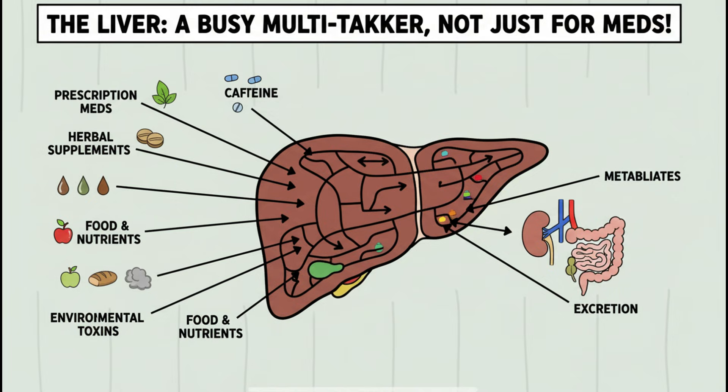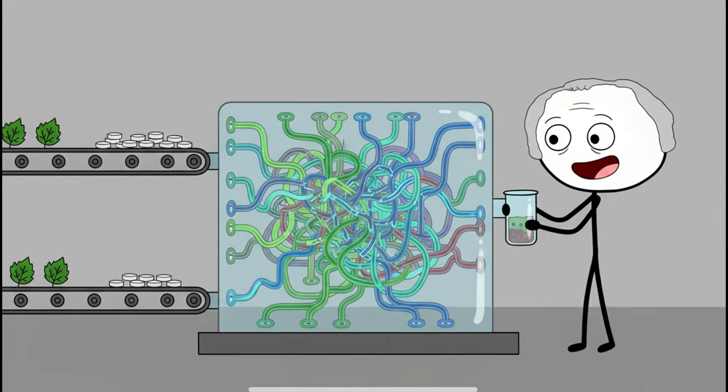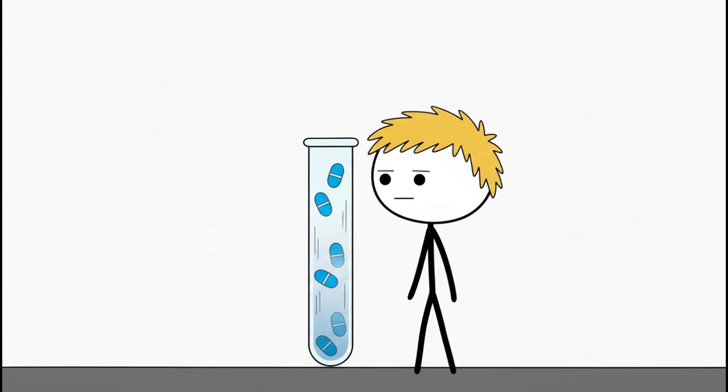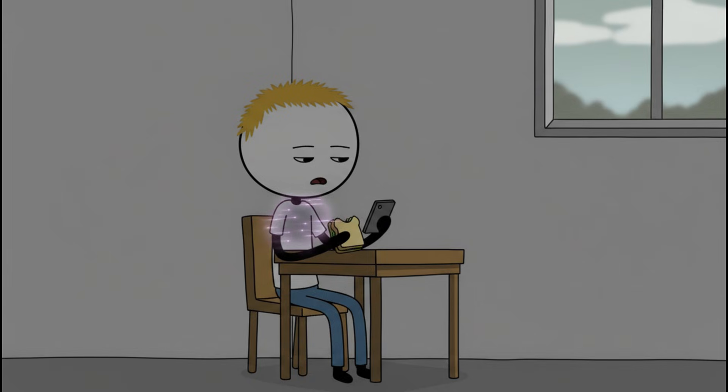Here's the uncomfortable science. Many herbs act on the same liver enzymes that process prescription drugs. St. John's wort is the classic example. It's natural, popular, and capable of reducing the effectiveness of antidepressants, birth control pills, heart medications, and more by speeding up drug metabolism. No warning bells, no dramatic symptoms, just quiet interference.